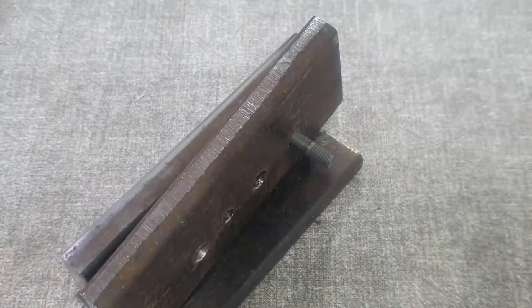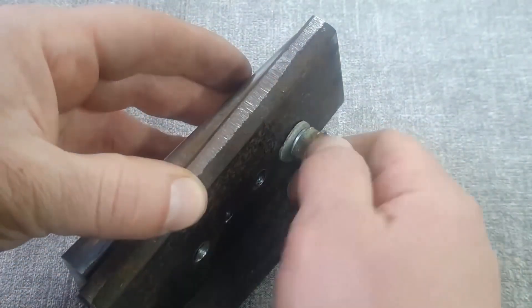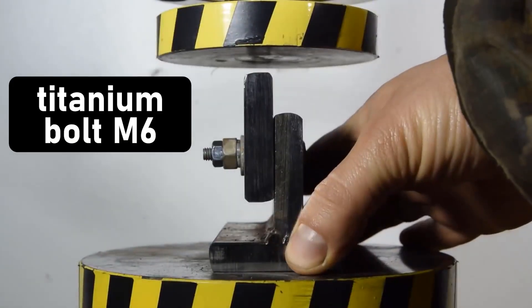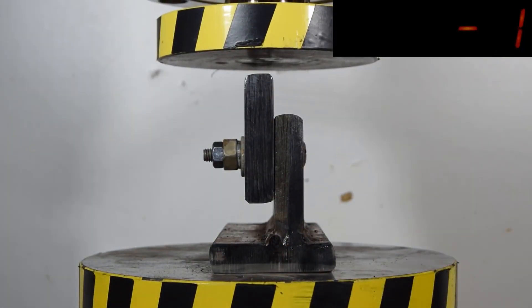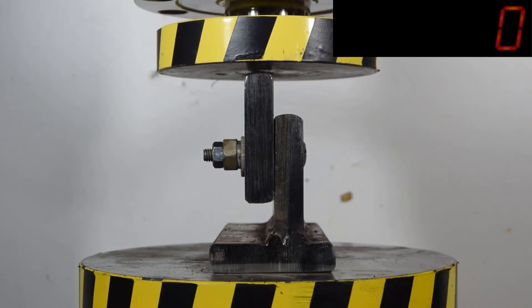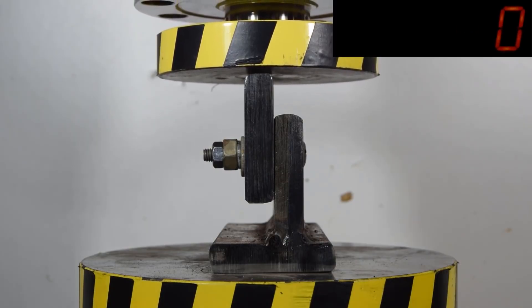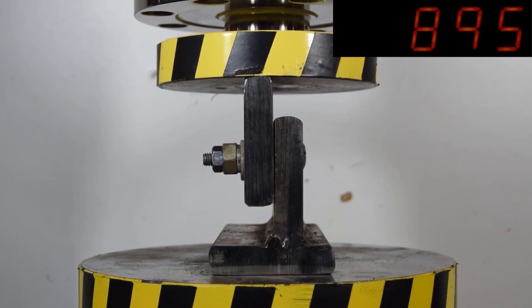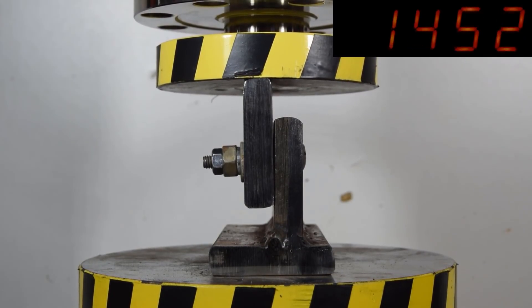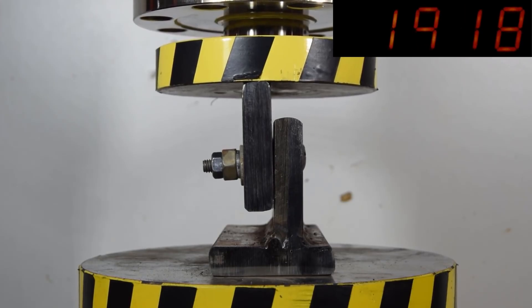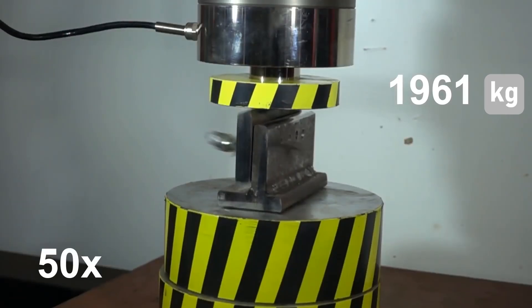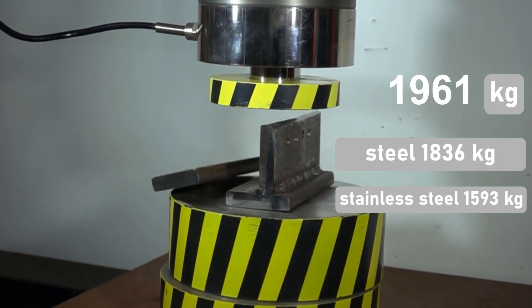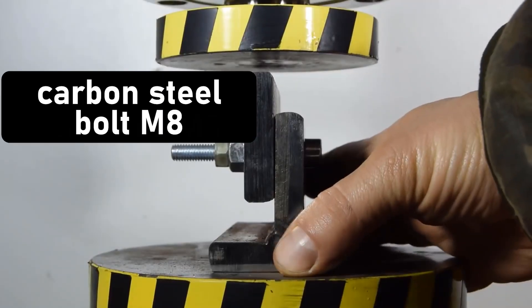What load will the titanium bolt withstand? Since the threaded part of the titanium bolt is short, we'll have to use several nuts. The titanium bolt held up to shearing almost 2 tons. Amazingly, its mass is half that of steel, yet it can withstand a greater load.